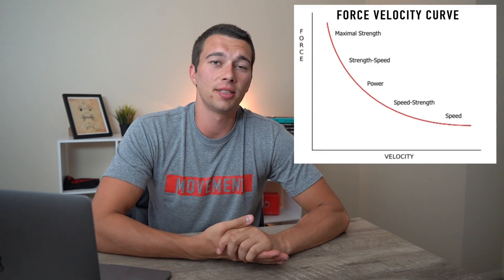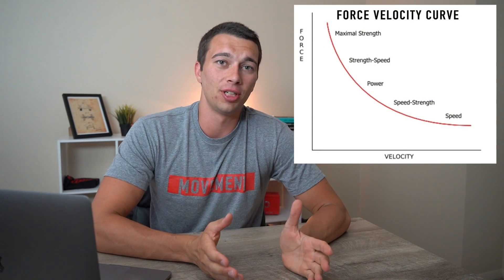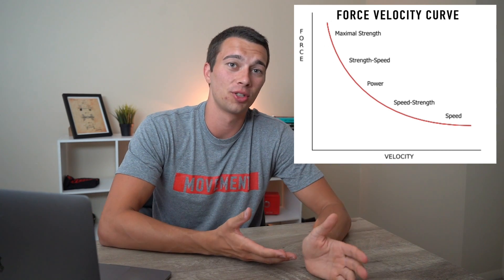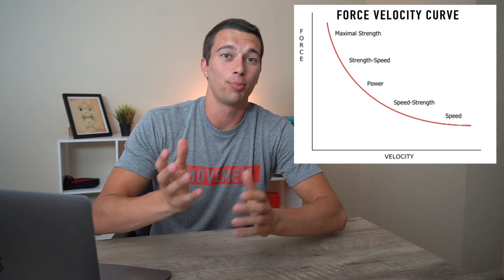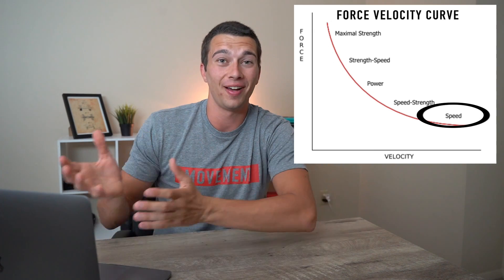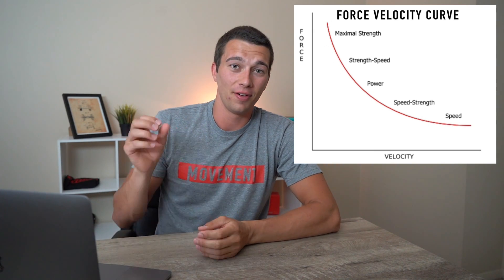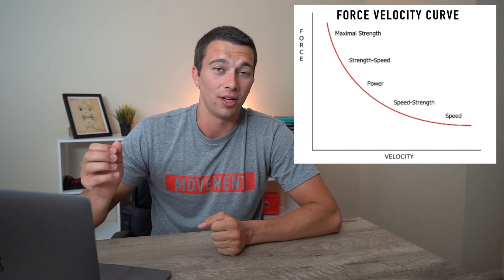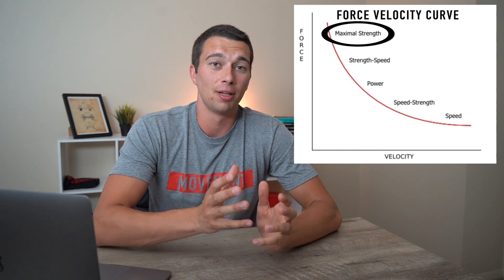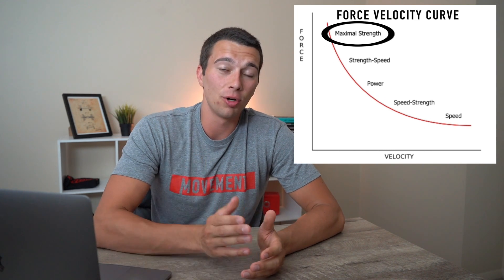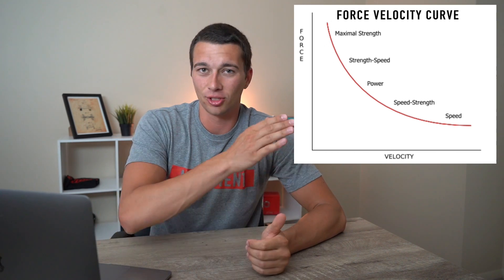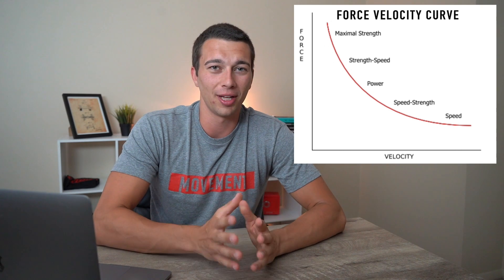When we're thinking about the force velocity curve, this is basically showing that there's an inverse relationship between moving really fast and moving a lot of resistance or really high force. So if we think about something like sprinting, that's going to be really low resistance — there's no external load on you if you want to move as fast as possible. So that would be the very bottom, the speed portion of the force velocity curve. On the entire other end of the spectrum would be something like a powerlifter doing a one rep max — the most forceful but the slowest velocity. And there's all kinds of training in between.